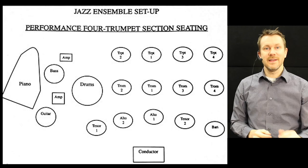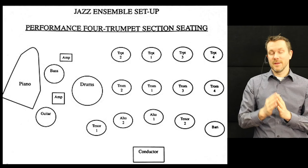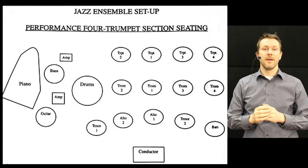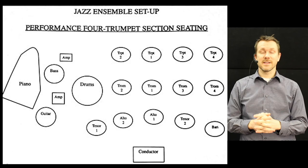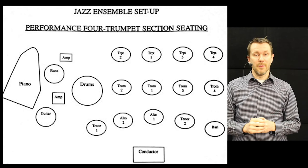Have you ever thought about why you're sitting the way you're sitting in the section? Typically, lead alto will sit in the middle. Second alto will be to the immediate right, and lead tenor will be also to the right. On the left side, you have second tenor, and then baritone saxophone. I will explain why this particular seating works very well. It hasn't always been the case, and there are variations to the seating.